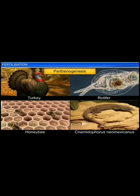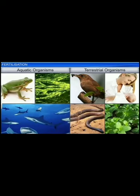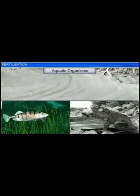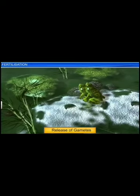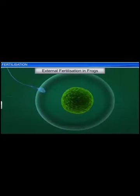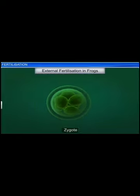Parthenogenesis, however, occurs only in a few organisms. Fertilization, on the other hand, occurs in a wide variety of aquatic as well as terrestrial organisms. However, the way fertilization occurs in aquatic organisms is very different from the way it occurs in terrestrial organisms. In most aquatic organisms including algae, fish and amphibians such as frogs, fertilization is external, where the male and female release their gametes in water and the fusion of the gametes as well as the formation of the zygote occurs outside the body of the organism — that is, in an external medium such as water.